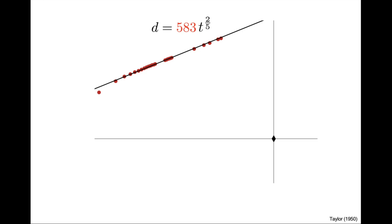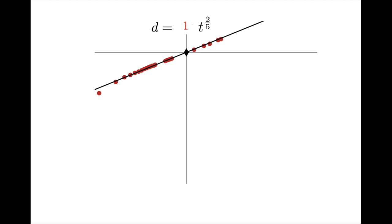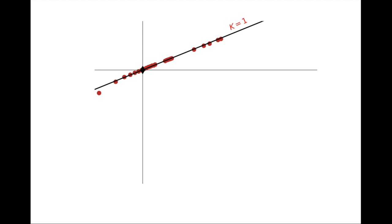For convenience, so that they do not overlap with the data, the axes of a plot like this are usually pushed to the side, but they are really centered at the point of coordinate 1 and 1 — that is, of log 0. With this arbitrary center and these anthropocentric units of meters and seconds, the prefactor k is 583. If we change the units, the value of k naturally changes. And if we select units that are on the path of the explosion, then the value of k becomes 1. We can move up and down the curve and the prefactor remains 1 — meaning we can always write the regime in normalized form, where d_i and t_i are the coordinates of any point along the trajectory. In the context of power laws, this is self-similarity.